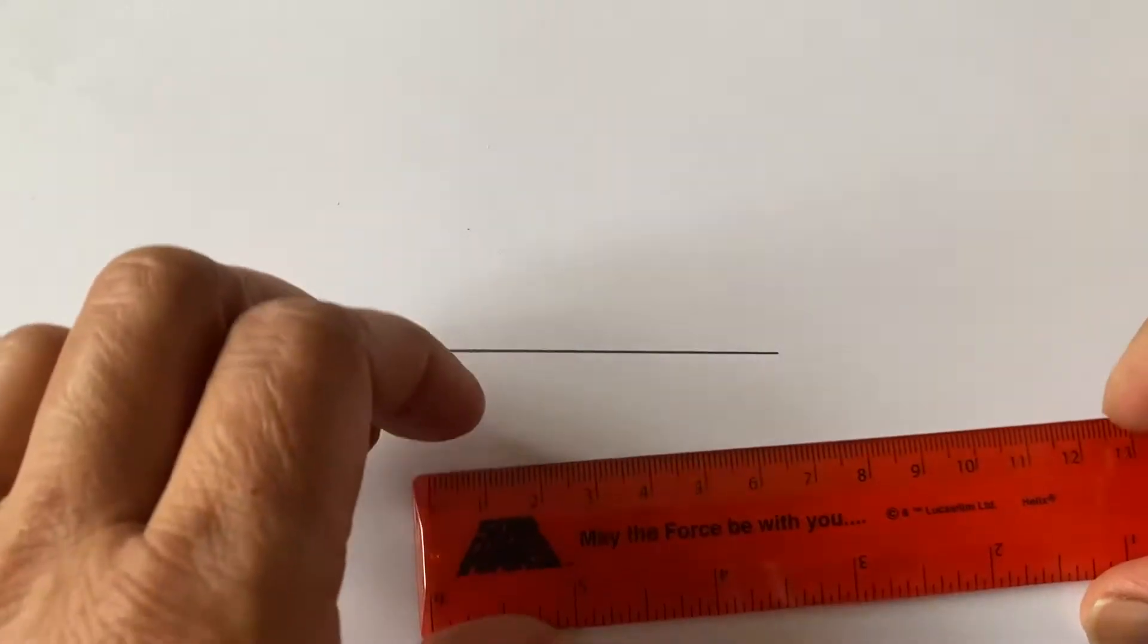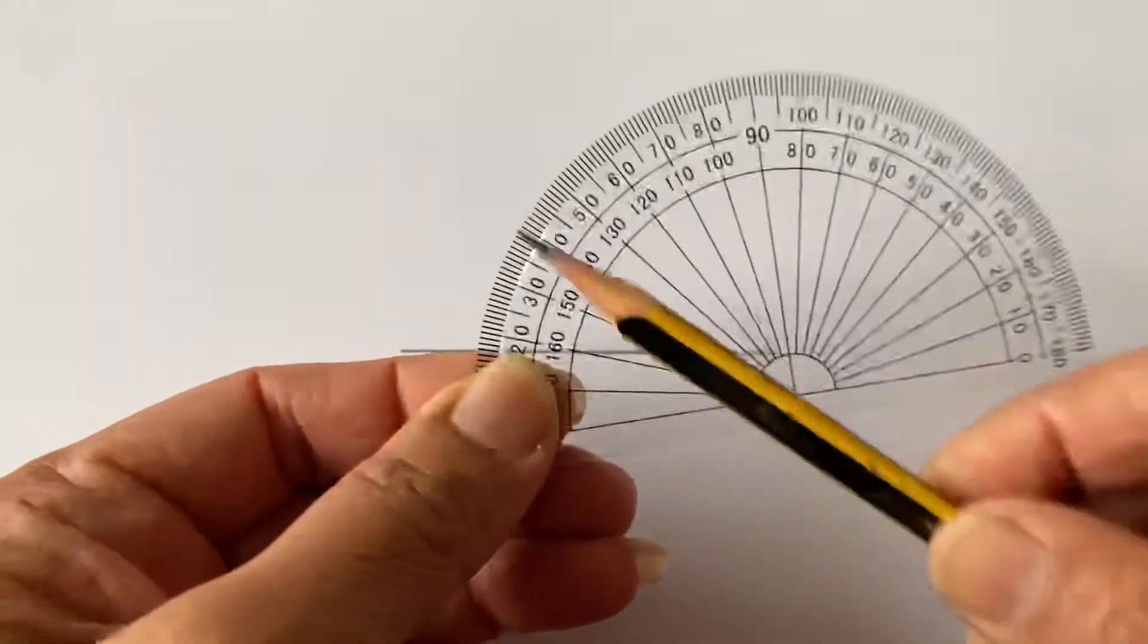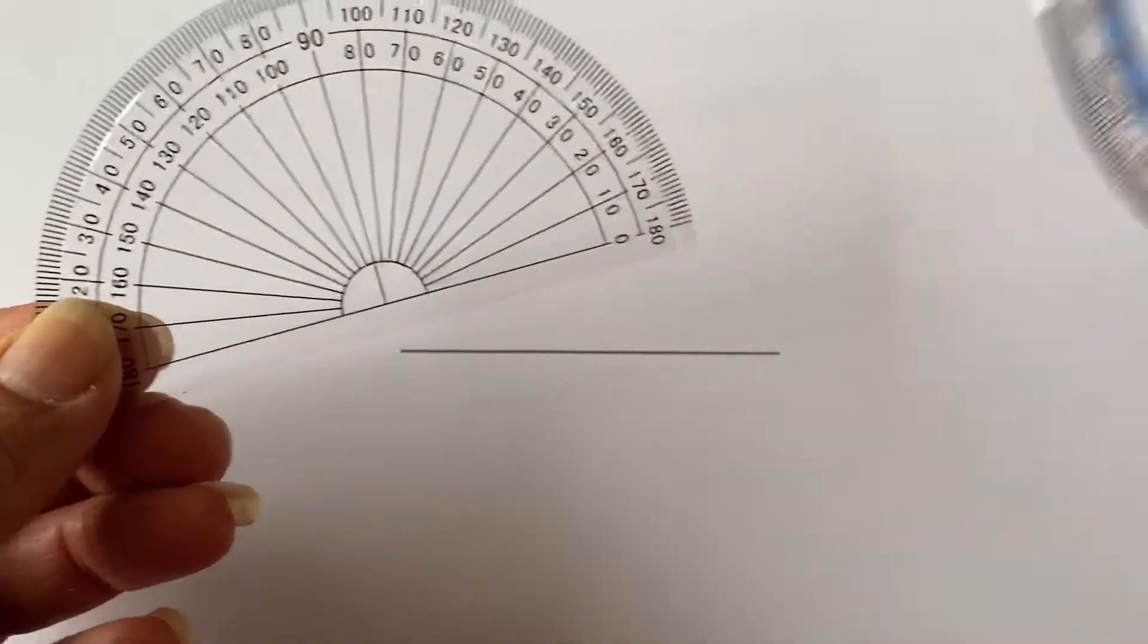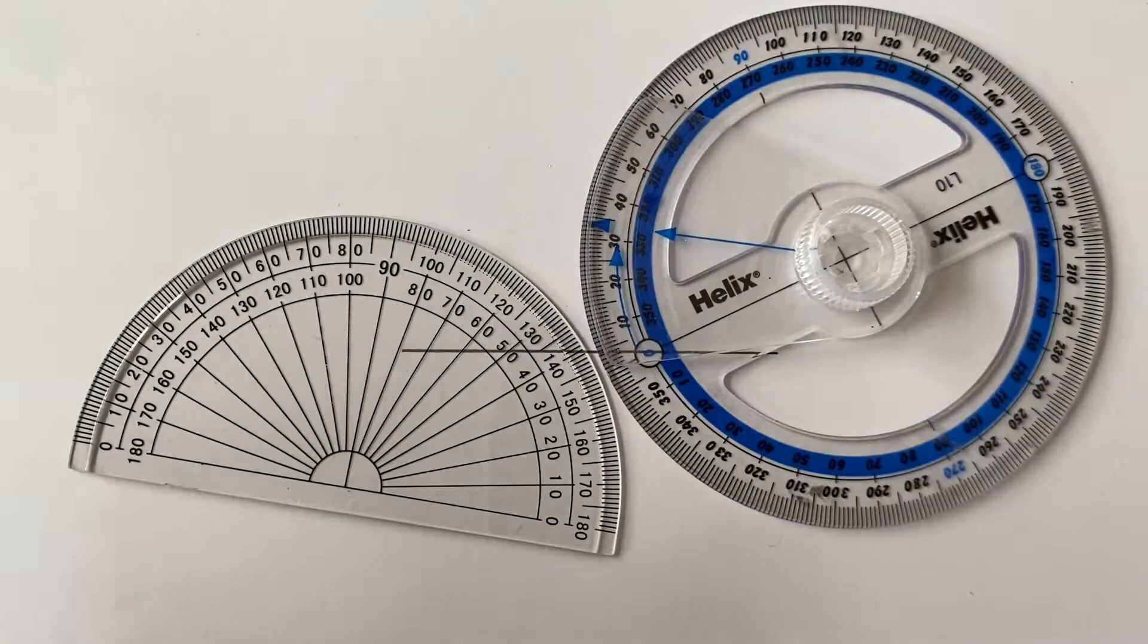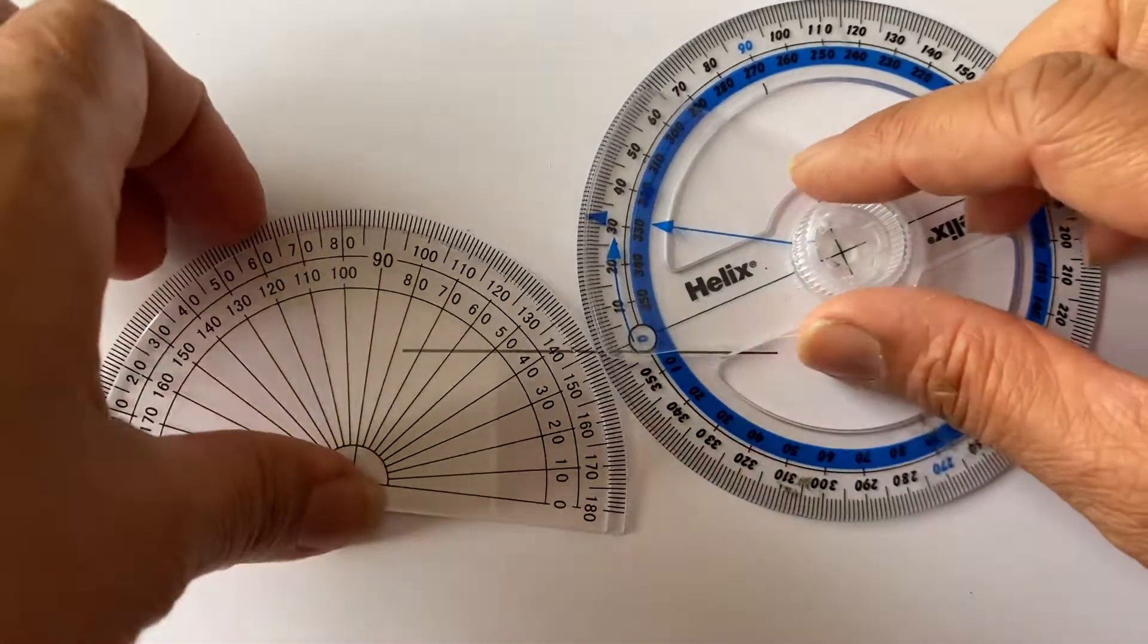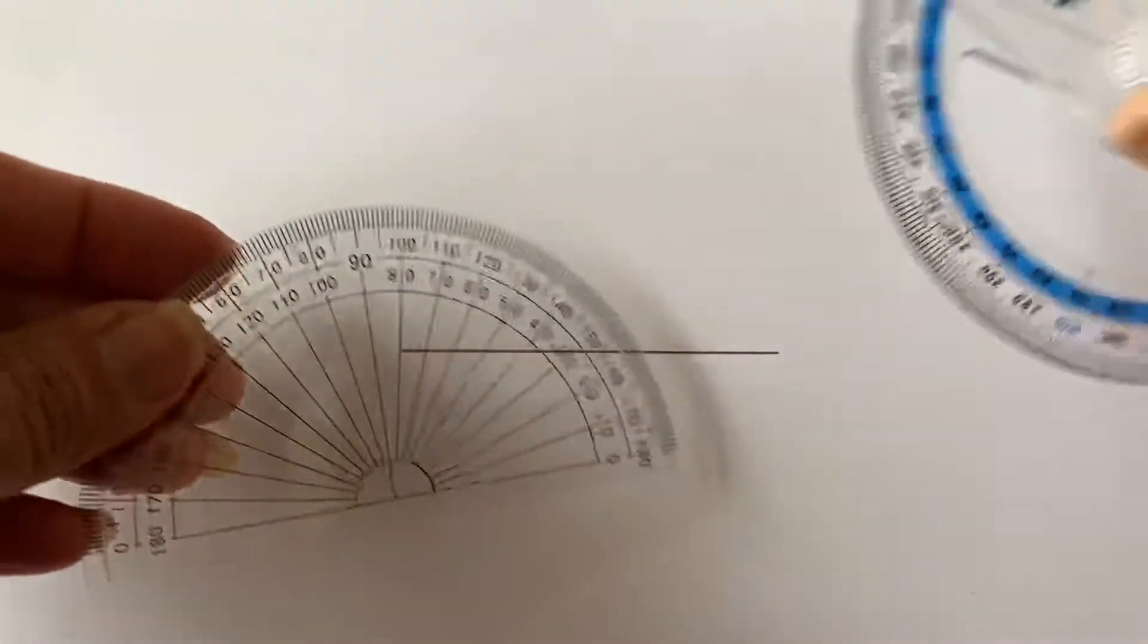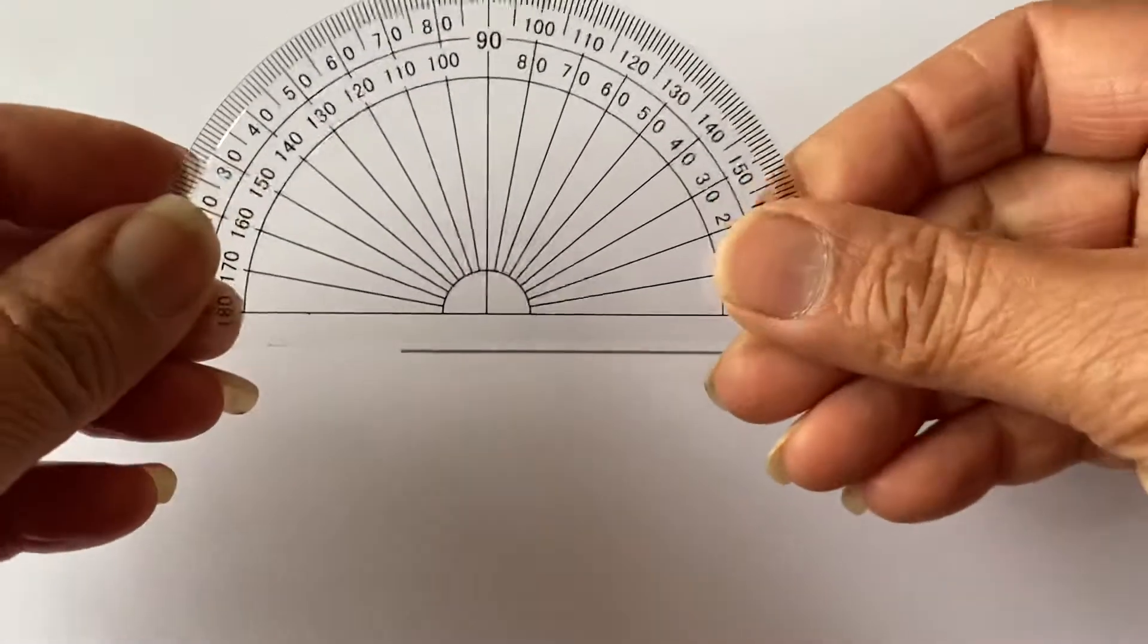So I've got a nice line there and I would like to draw an angle. To use this protractor, now this is a semi-circle, you can use a full protractor like this. You get all sorts of protractors these days. They all work, they all do the same job. I'm going to use this one for now.